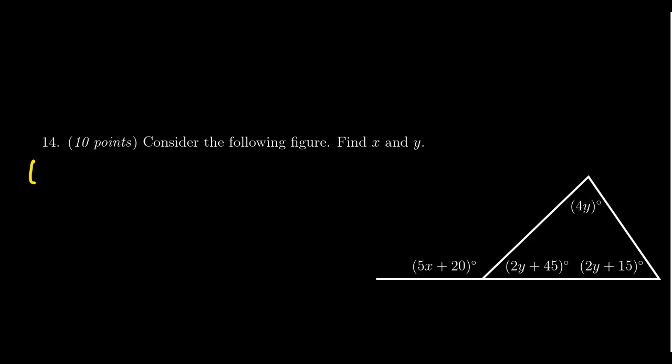That means if I take 5x plus 20 degrees and I add that to 2y plus 45 degrees, that's going to equal 180 degrees. They're supplementary angles. Therefore, the sum of the two angles will give us 180 degrees.